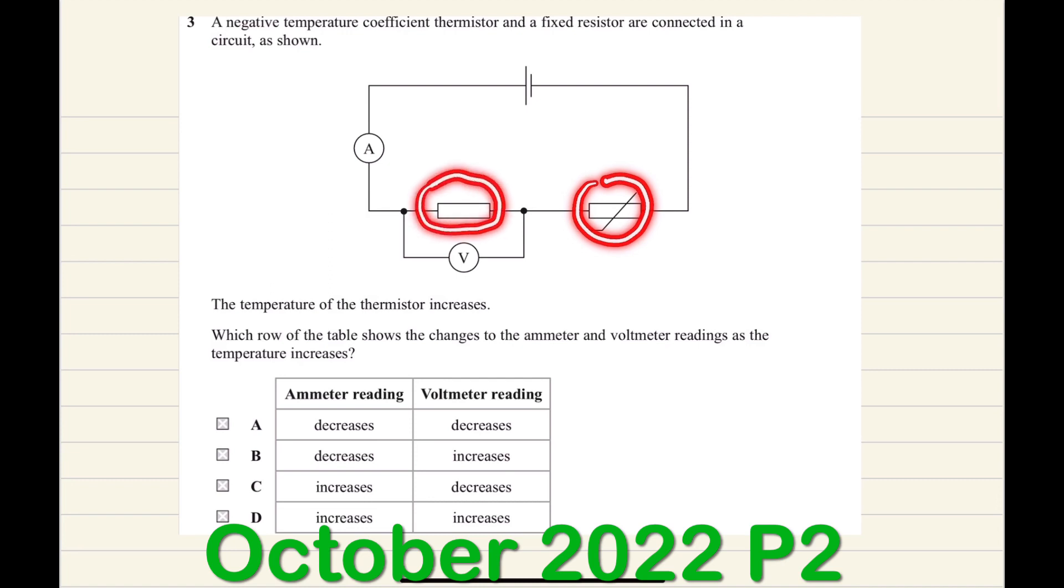Since the fixed resistor is connected in series with the thermistor, when the temperature increases, the resistance of the thermistor decreases.